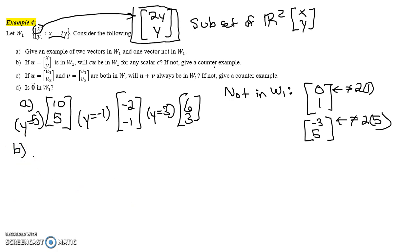Part b here. If u is any vector in W₁, then that means this vector u has to have the form [2y, y]. x has to equal 2y, so I'm going to write it this way. So there's a generic vector that's in W₁. Will c times u be in W₁ if c is just any number? Let's look at that. Let c be any number.